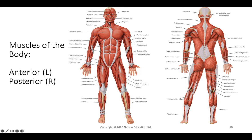In the front we have the pectoralis major pulling across, and moving into the arm the deltoid at the top of the shoulder. Moving down: the serratus, the biceps brachii, the brachialis, and toward the back the triceps brachii with three origins. Further down is the brachioradialis running down the radius, and the flexor carpi radialis helping move the fingers.